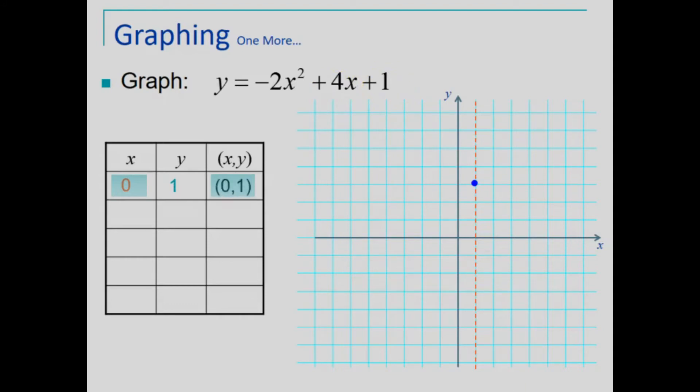Plotting the y-intercept, then using the symmetric property of the axis of symmetry, reflecting that same distance horizontally about the axis of symmetry gives us the point (2, 1).